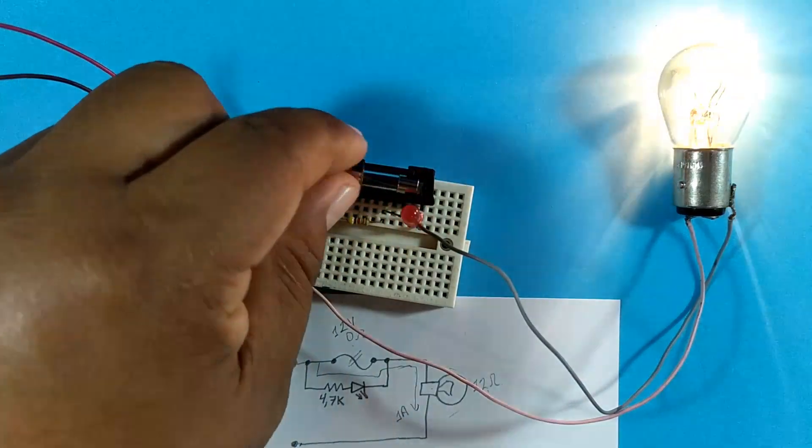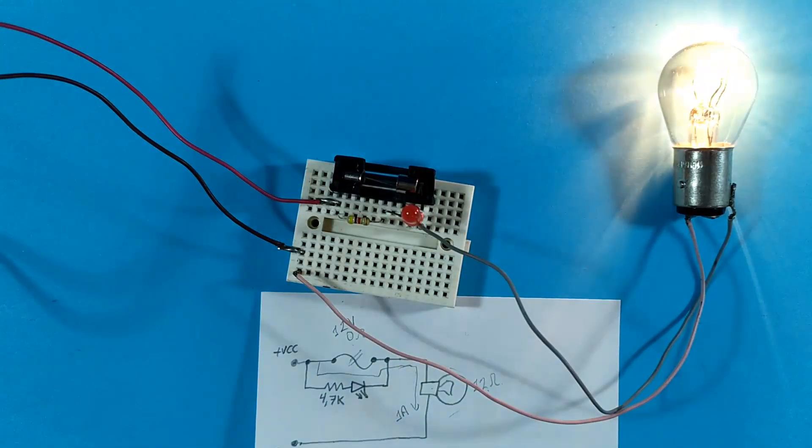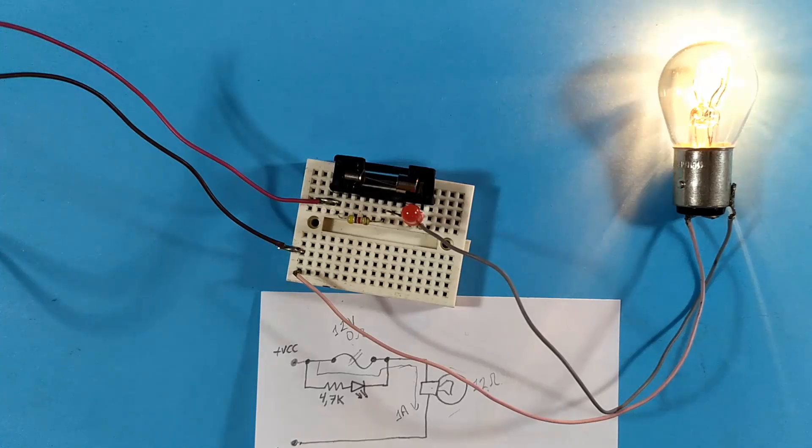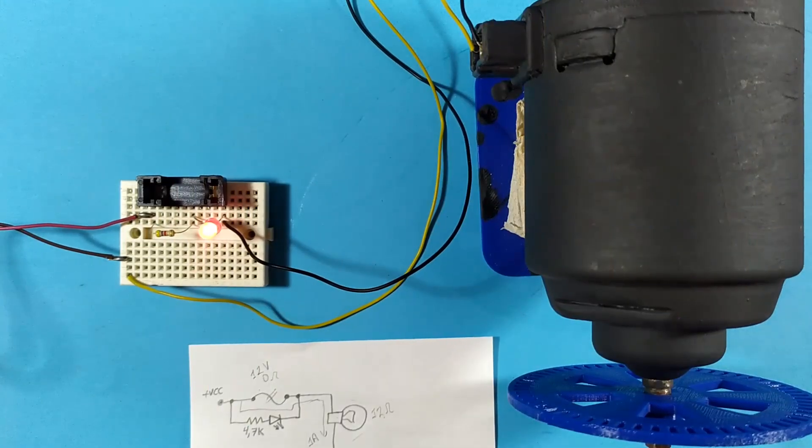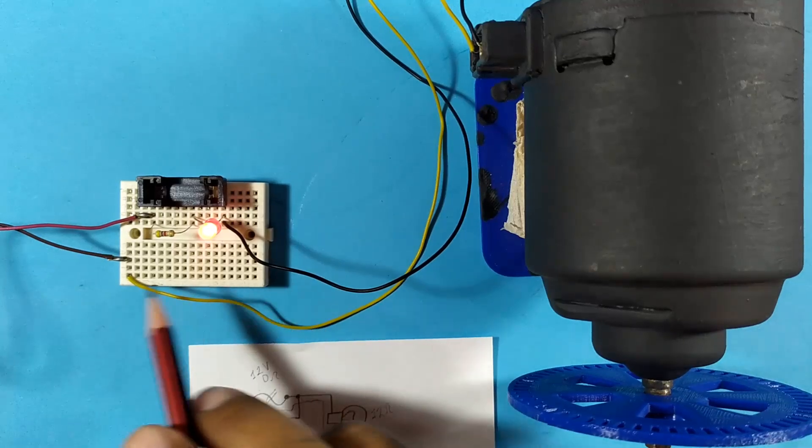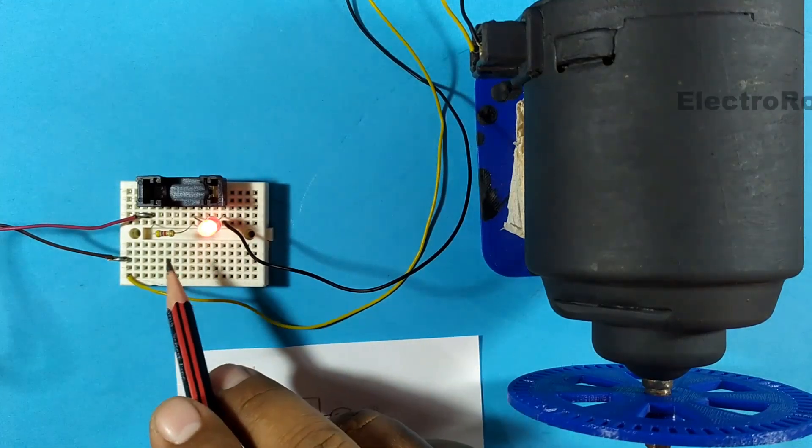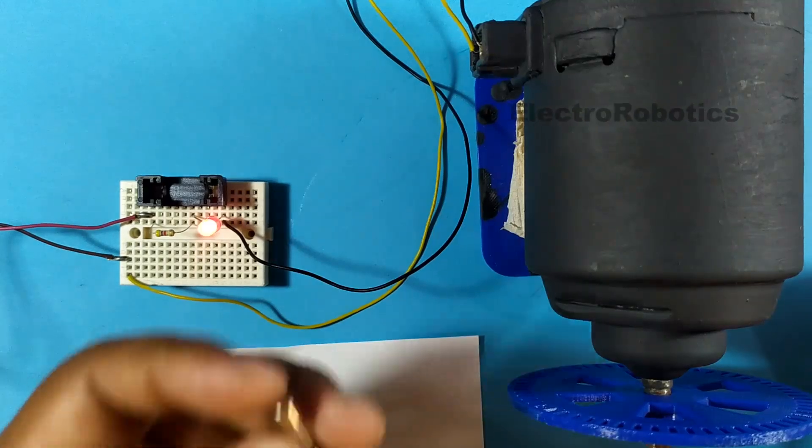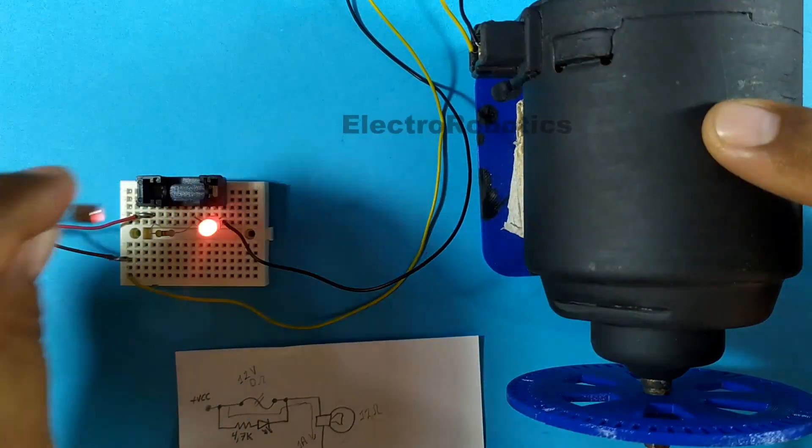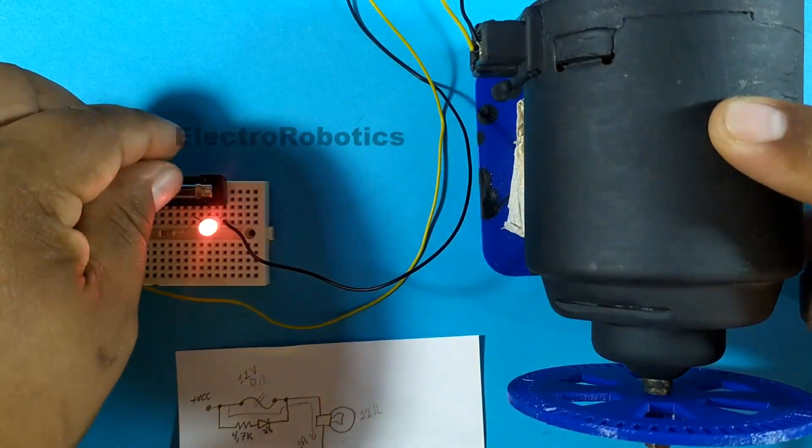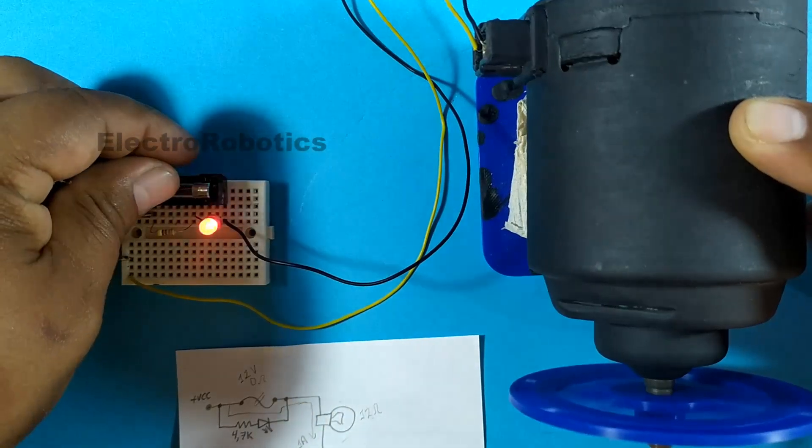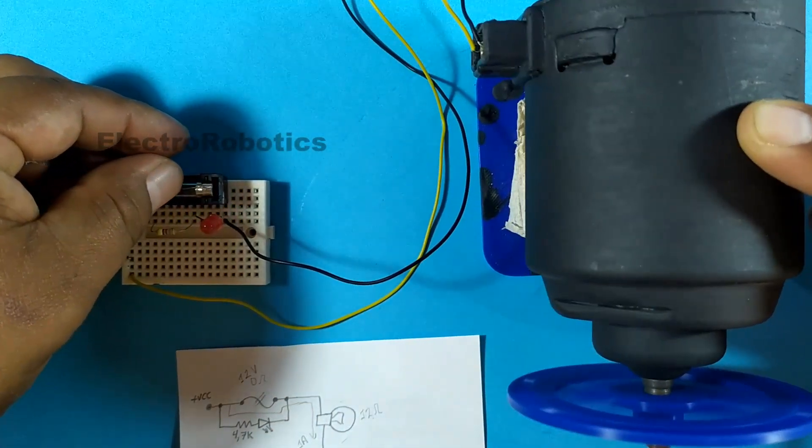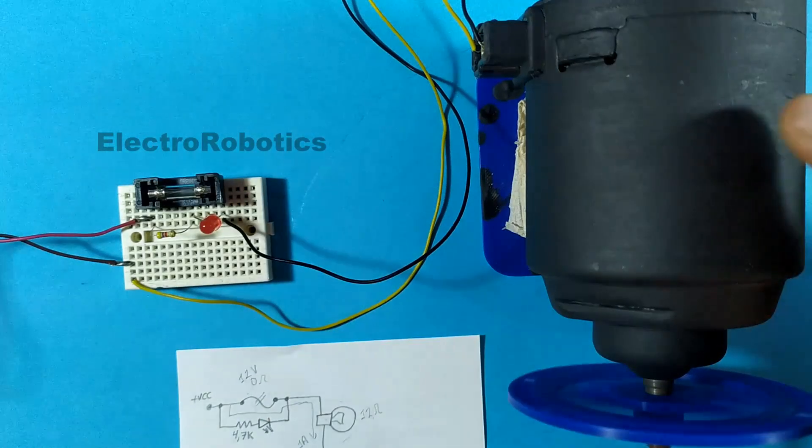This can also work with direct current motors. Well now let's see how it works with a direct current motor. And in this case our LED tells us that something happened with the fuse. We are going to place the fuse and the LED will have to turn off. We remove the fuse and the LED lights up. We place the fuse and the LED turns off.